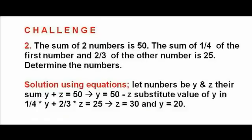Challenge two: the sum of two numbers is 50 and one quarter of the first and two thirds of second number is 25. Solution based on equations, answers are 30 and 20. See solutions tips images.